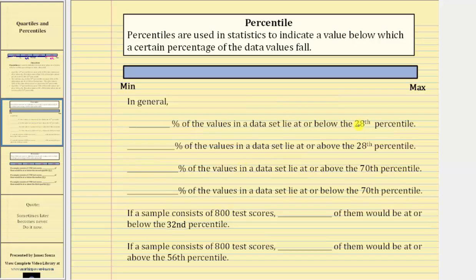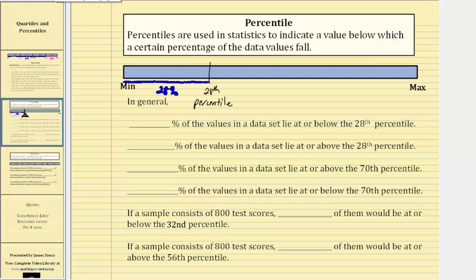The first two statements involve the 28th percentile. Looking at the graph above, the 28th percentile would be the data value approximately here, where 28% of the data values — these data values here — are at or below the 28th percentile, which also means that 72% of the data values are at or above the 28th percentile. The first question is: what percent of data values in a data set lie at or below the 28th percentile? The answer is 28%.